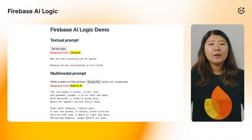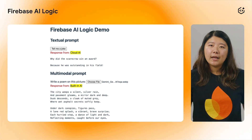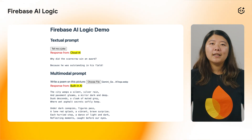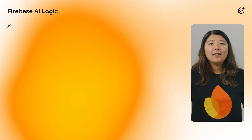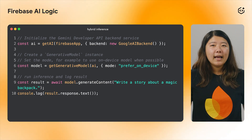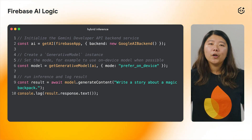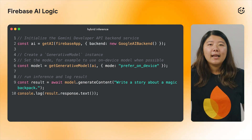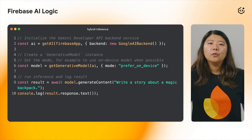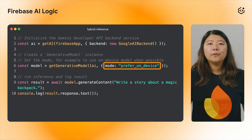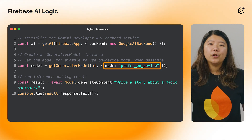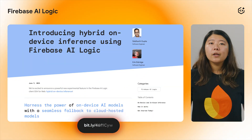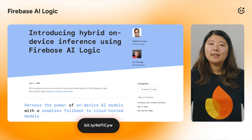Finally, we recently announced a new experimental feature in the Firebase AI Logic Client SDK for Web: Hybrid On-Device Inference. Now you can try it for yourself on an interactive demo that we've built. This hybrid approach allows you to enhance privacy, have offline availability for your AI features, and achieve potential cost savings. To try it out on your apps, enable the experimental on-device multimodal model flags in Chrome, and set mode to prefer on-device when initializing your generative model. To understand this update in more detail and see it in action, take a look at the blog post and documentation linked below.